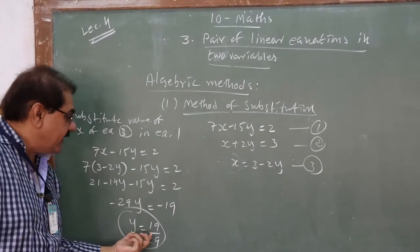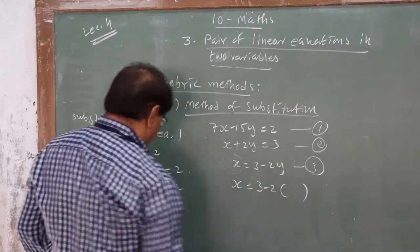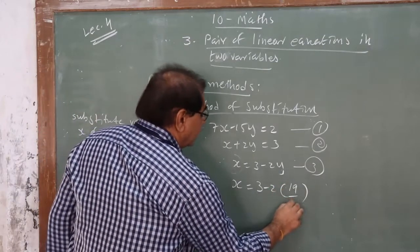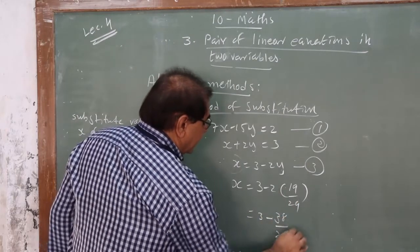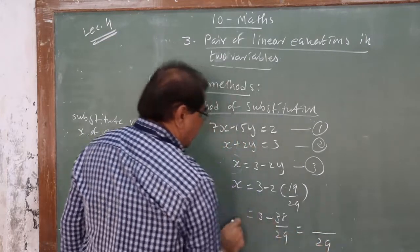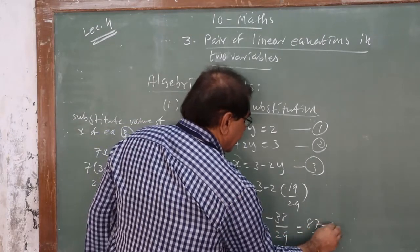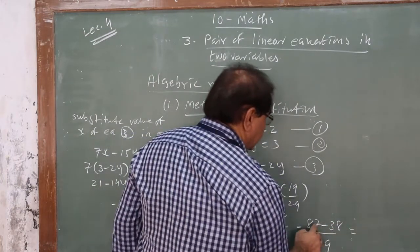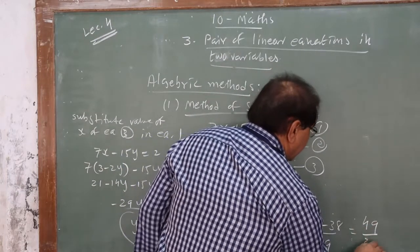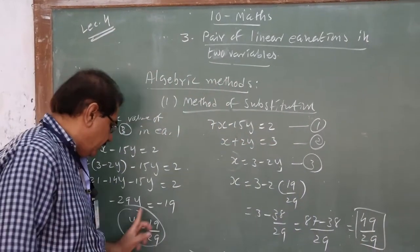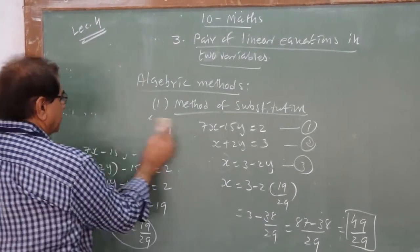Now substitute this value of y into Equation 3 to get x. x = 3 − 2(19/29) = 3 − 38/29. Taking LCM 29: (87 − 38)/29 = 49/29. So x = 49/29. This is how you find both values of x and y using the method of substitution.